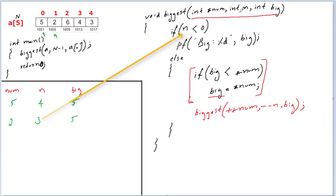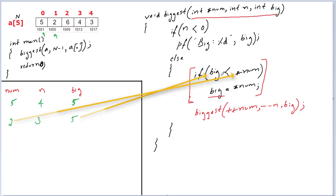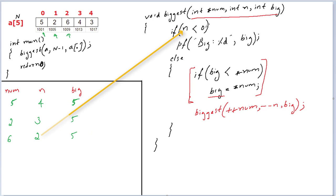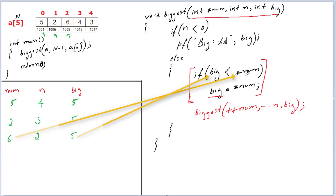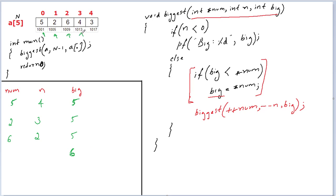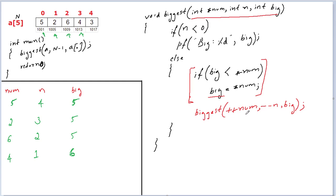Again recursive call. Three less than zero? False, else block executes. Big is five, five less than two? False. Recursive call again: plus-plus num points to six, minus-minus n is two, big remains five. Two less than zero? False, else block executes. Six greater than five? True — transfer the value of star num to big, which is now six. Recursive call: plus-plus num points to four, minus-minus n is one, new big is six. One less than zero? False. Six less than four? False. Recursive call: plus-plus num points to three, minus-minus n is zero, big is still six.